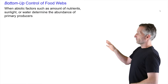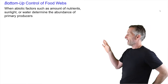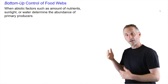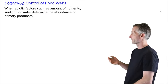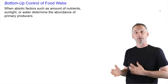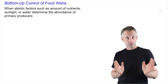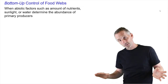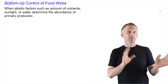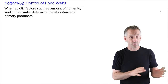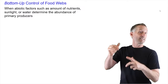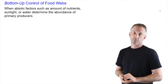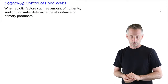Bottom-up control of food webs occurs when abiotic factors, such as the amount of nutrients, sunlight, or water, determine the abundance of primary producers, which will then have a series of cascading effects on the things that eat primary producers, on the things that eat those, and on the decomposers of all of those organisms.